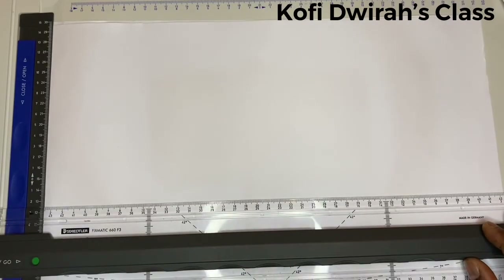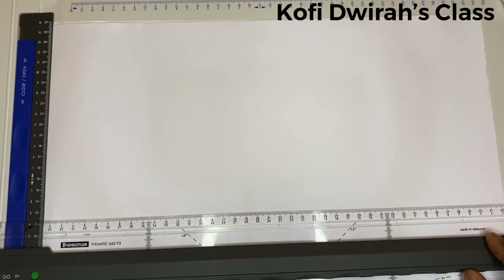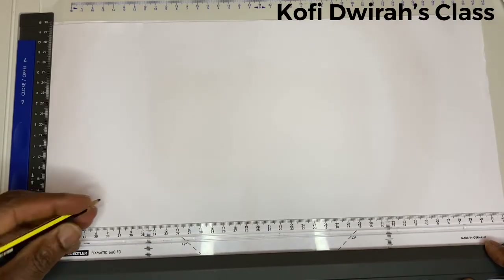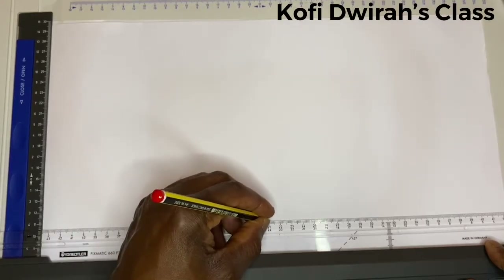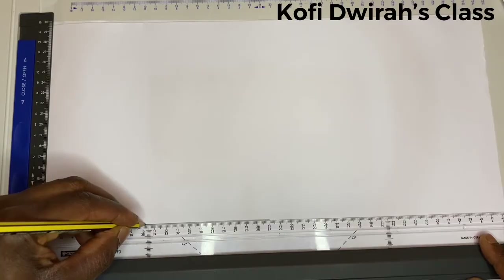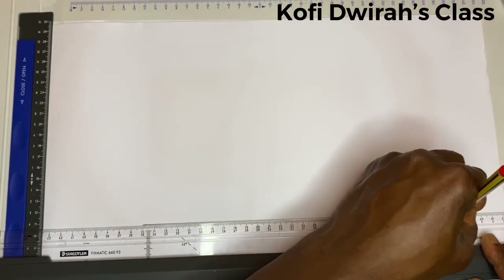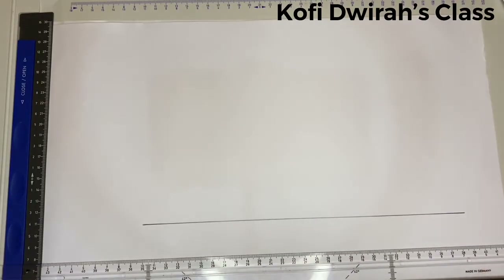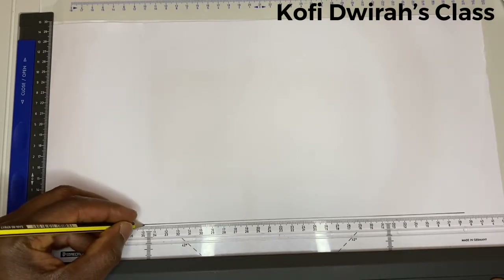First you draw your triangle of any size. I'm going to draw a triangle with one side being 11 centimeters. Let me mark it.